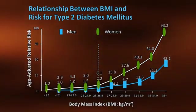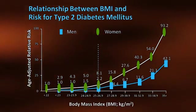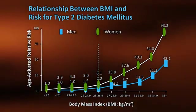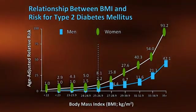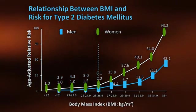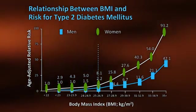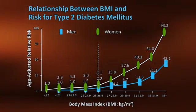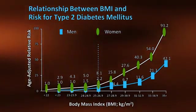As discussed in the video on obesity, the accumulation of visceral fat located within the abdominal cavity that surrounds important internal organs can lead to insulin resistance and thus type 2 diabetes.